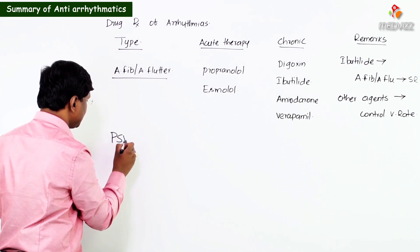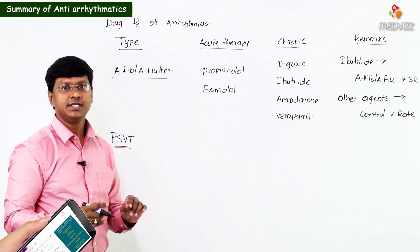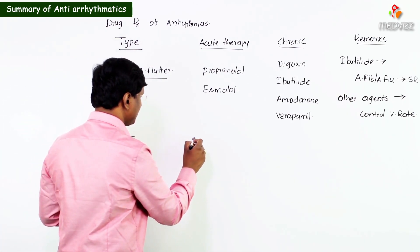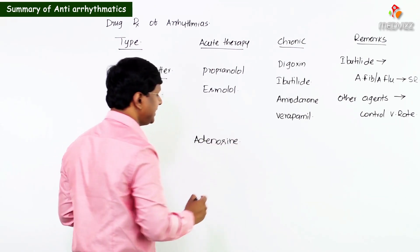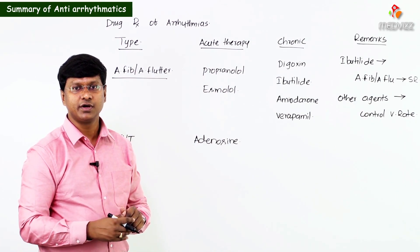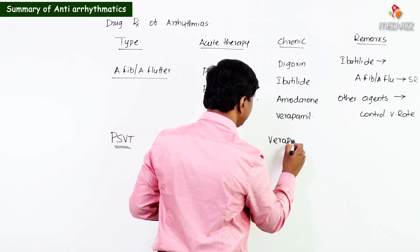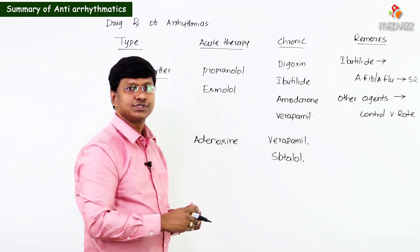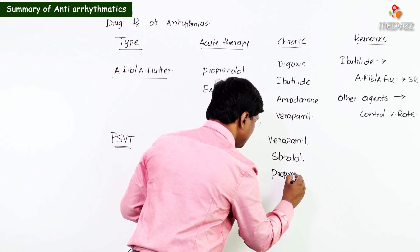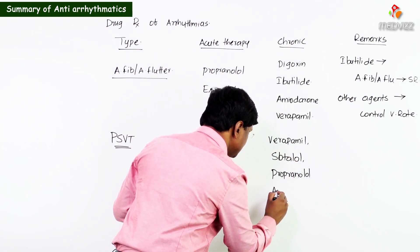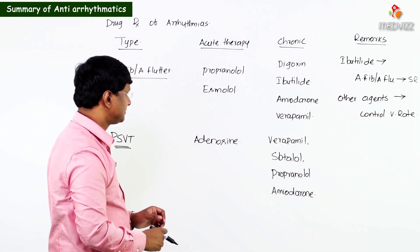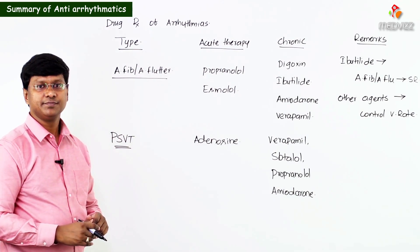In PSVT (paroxysmal supraventricular tachycardia), the drug of choice for acute therapy is adenosine. For chronic therapy, the drugs include verapamil, sotalol, propranolol, and amiodarone.